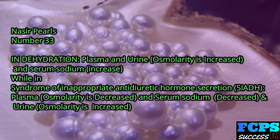Nasir Pearl number 33: In dehydration, both plasma and urine osmolarity are increased, and serum sodium is increased. In SIADH (syndrome of inappropriate antidiuretic hormone secretion), plasma osmolarity is decreased, serum sodium is decreased, and urine osmolarity is increased.